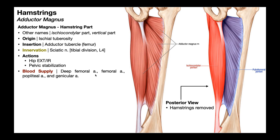The hamstring part of adductor magnus receives blood from the deep femoral artery, the femoral artery proper, the popliteal artery, and the genicular artery. Its innervation is split from the adductor part: the pubofemoral portion is innervated by the obturator nerve, while the ischiocondylar hamstring part is specifically innervated by the sciatic nerve, tibial division — the same as the true hamstring muscles. However, instead of L5 to S2, the hamstring part of adductor magnus only receives nerve root contributions from the L4 level.